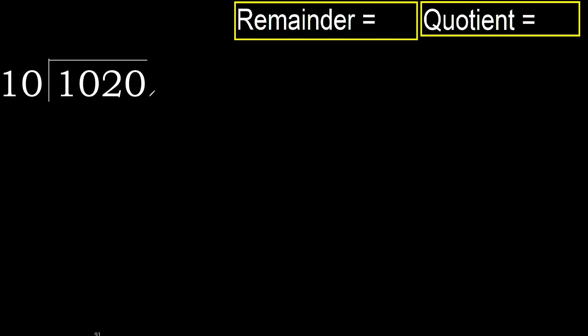1020 divided by 10. 1 is less, therefore next. 10 is not less, therefore with 10. 10 multiplied by which number is nearest to 10,